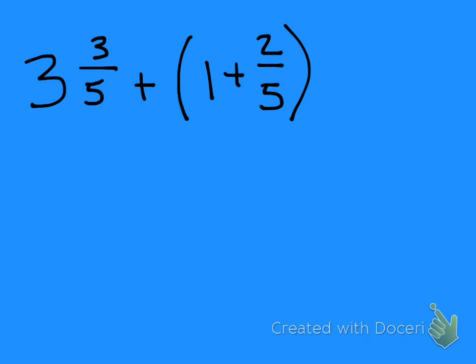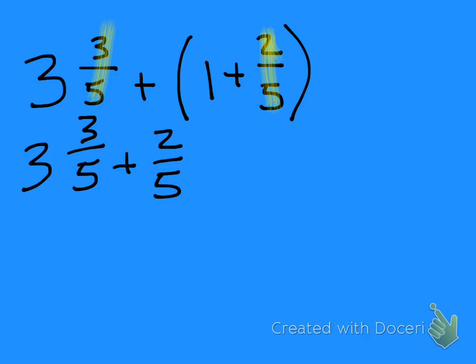Another example: 3 and 3/5 plus 1 plus 2/5. Normally the parentheses mean we would do that first, but I see that 3/5 and 2/5 is going to get me a whole. So I'm going to use the commutative property and change the order to make it easier to add — 3 and 3/5 plus 2/5, and then add the 1.